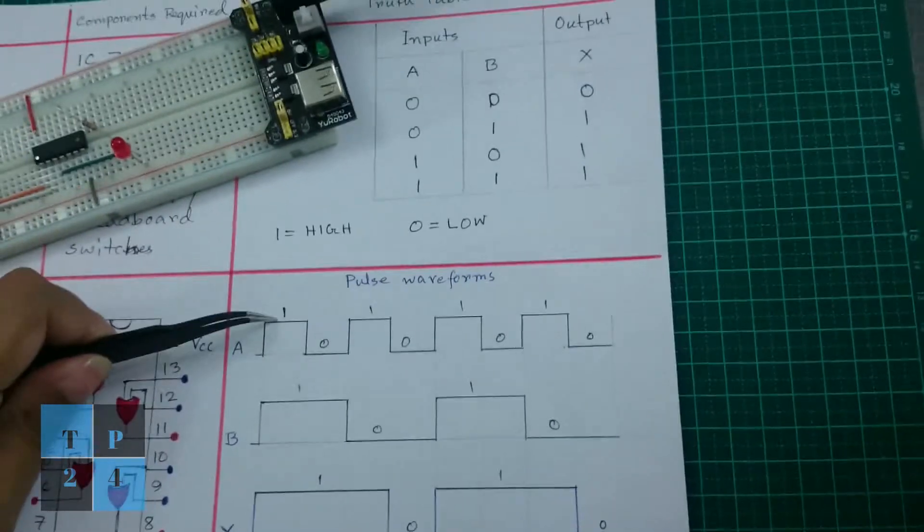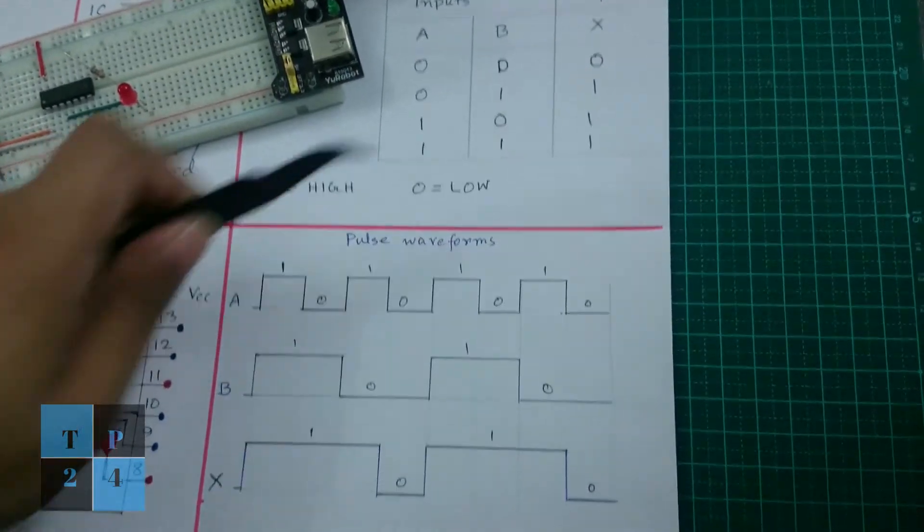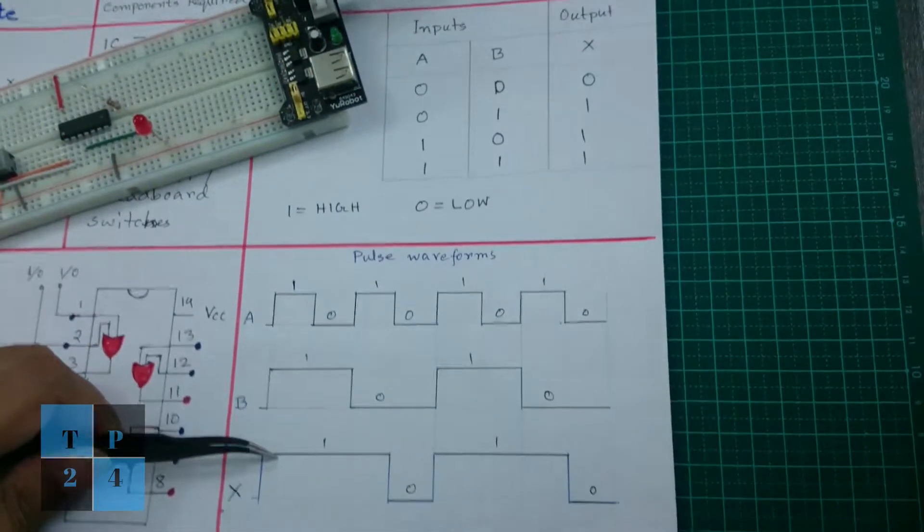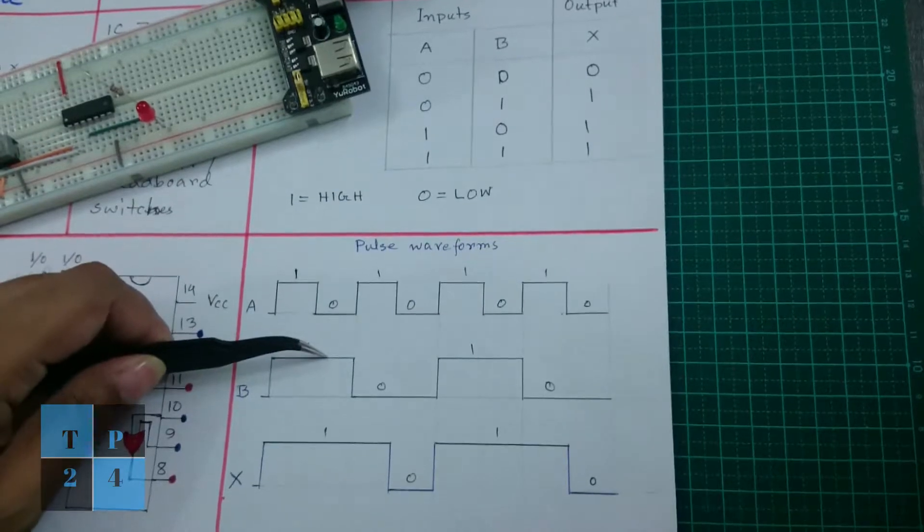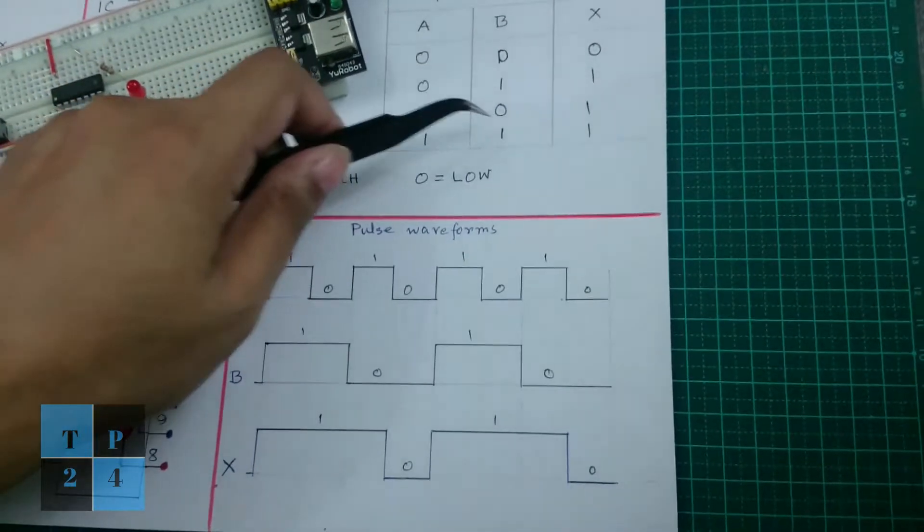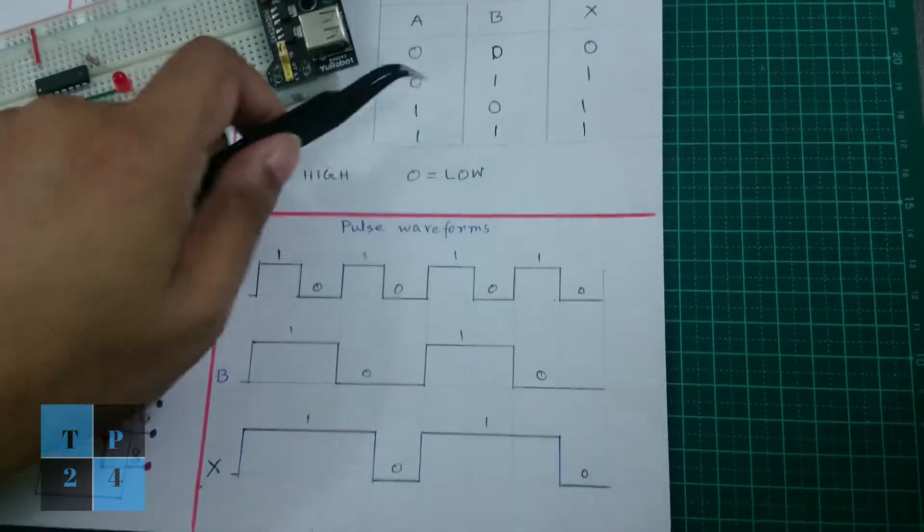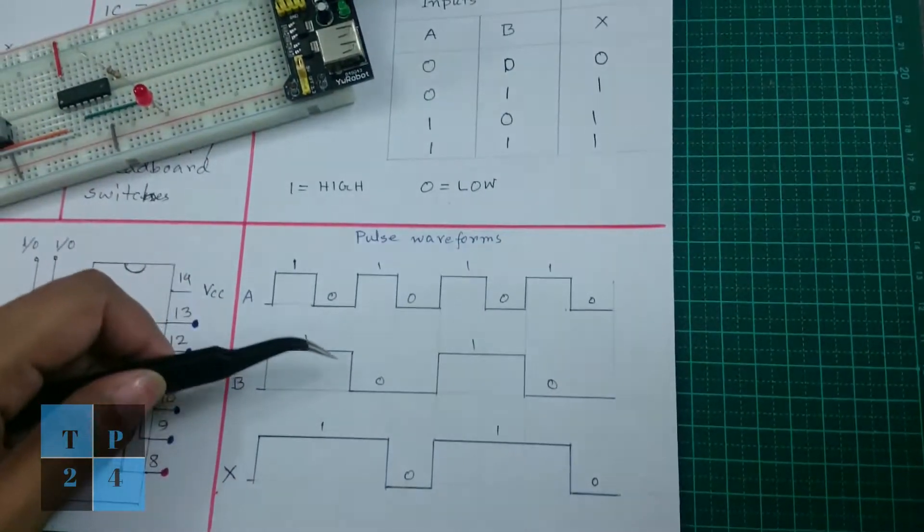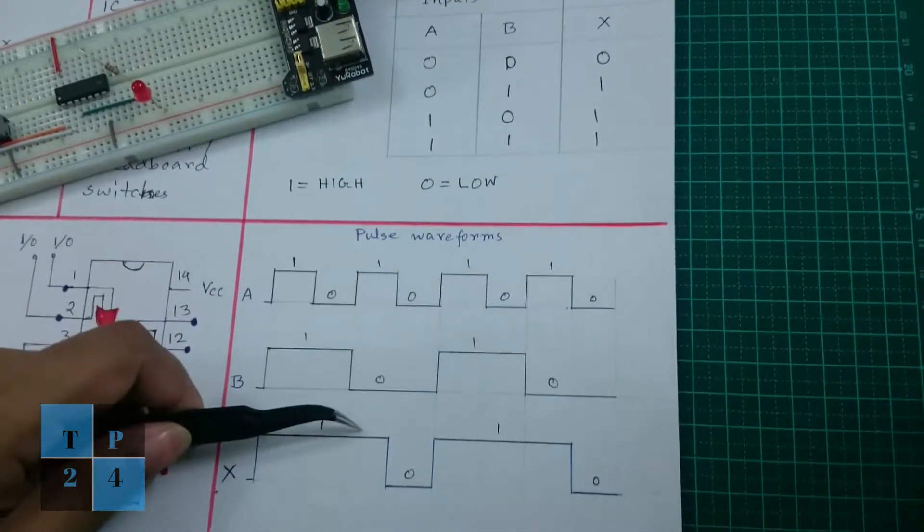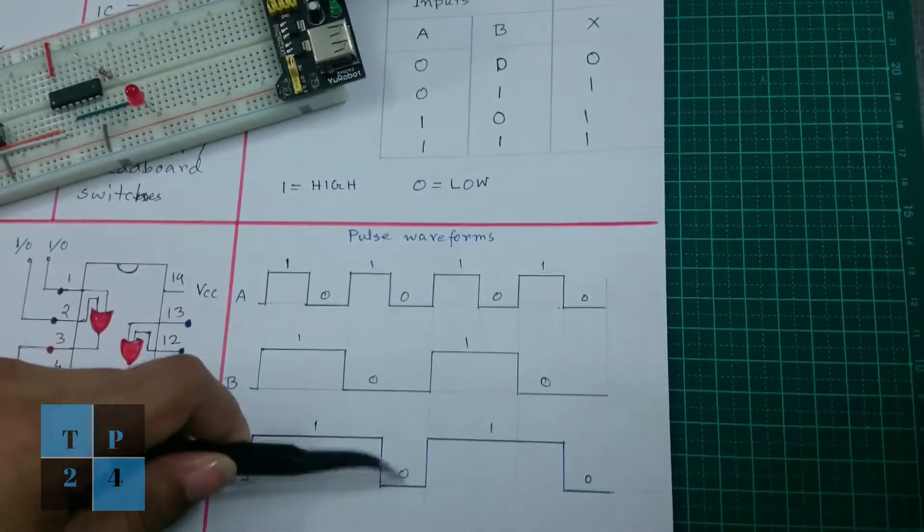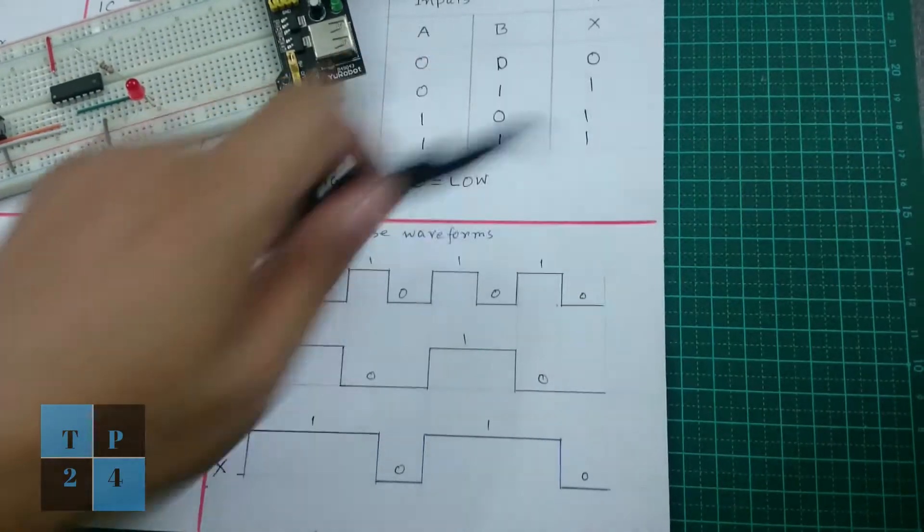Here you can see 1 and 1 will give you 1, so output is 1. 0 and 1 will give you 1, so output is 1. 1 and 0, that means 1 and 0 is 1, so again the output is 1. Here 0 and 0, so output is 0.